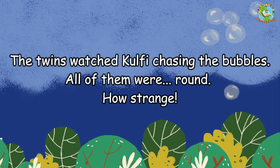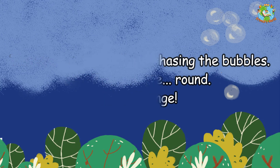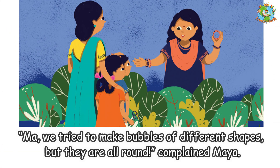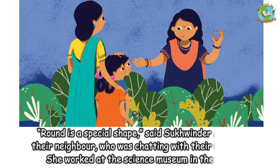The twins watched Kulfi chasing the bubbles — all of them were round. "How strange!" "Ma, we tried to make bubbles of different shapes but they're all round," complained Maya. "Round is a special shape," said Sukwindar Auntie, their neighbor who was chatting with their mother. She worked at the science museum in the city.